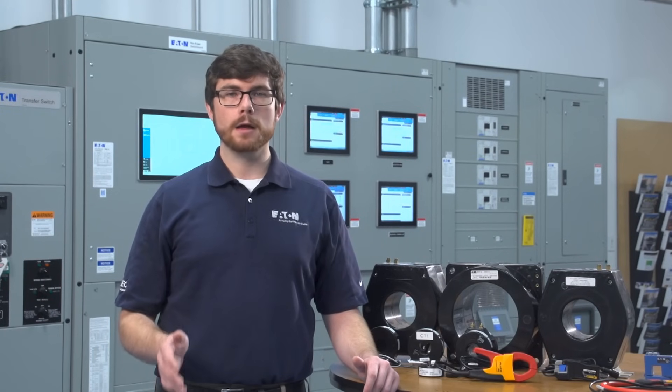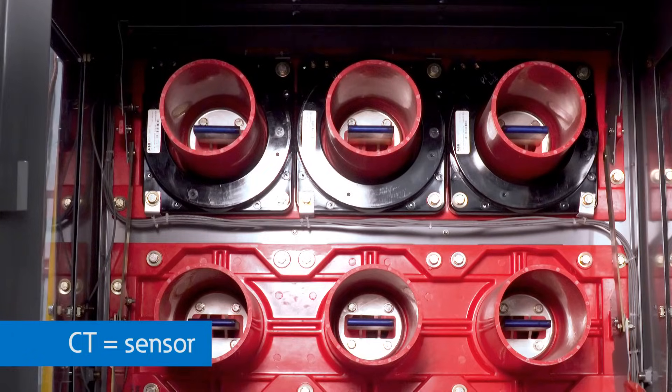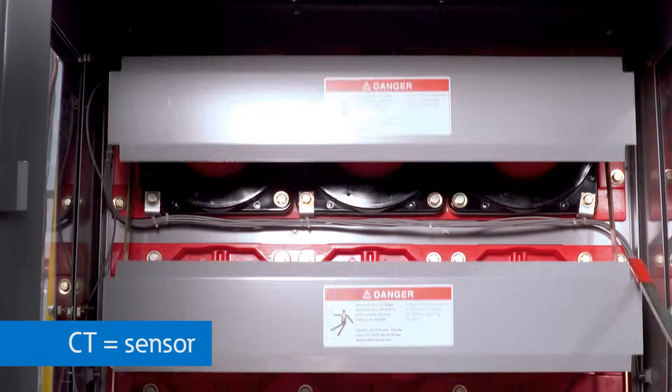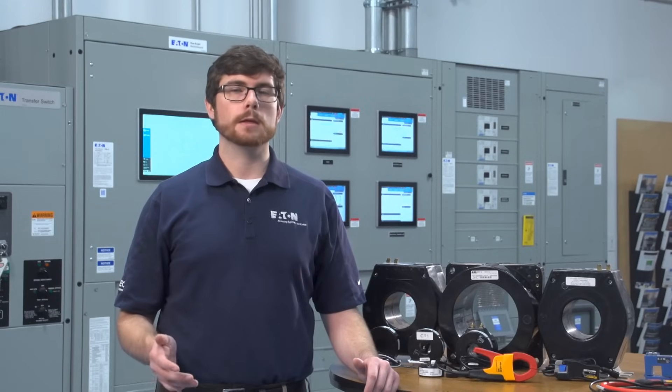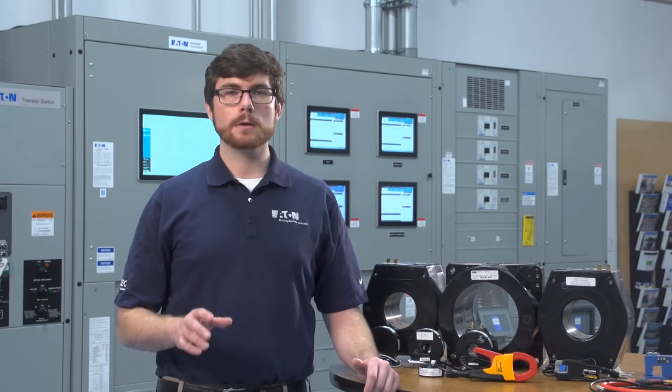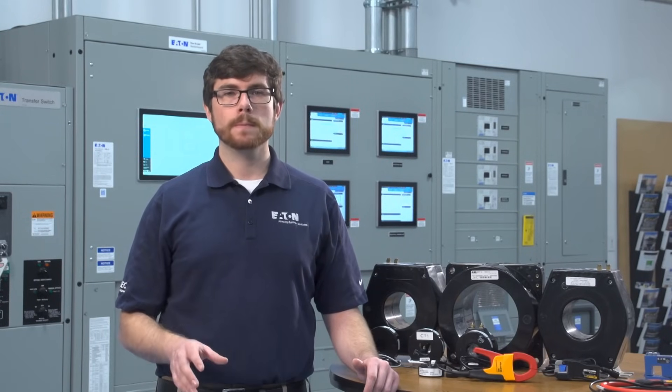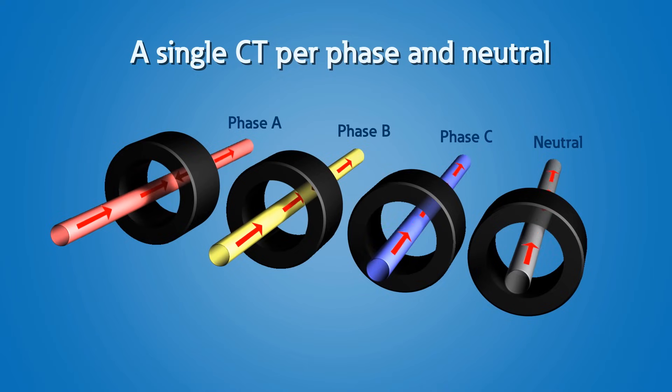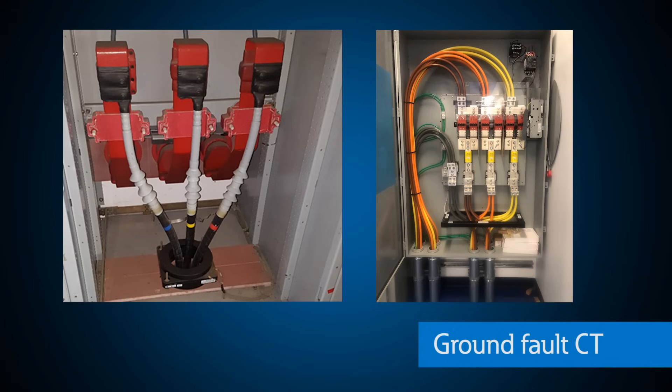Many circuit breakers have built-in CTs used to monitor current. As a point of clarification, a lot of people call CTs sensors when they are mounted inside switchgear or circuit breakers. But the functionality and purpose is the same, to get current measurements to a useful level. A single CT is generally needed for each phase and neutral to monitor current, but for ground fault protection a special type of CT is used.